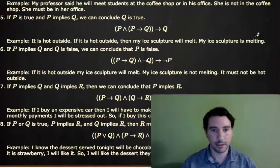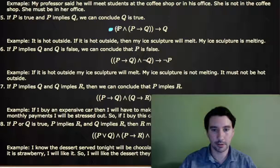If P is true, and P implies Q, then we can conclude that Q is also true. So, P and P implies Q implies altogether that Q is true.